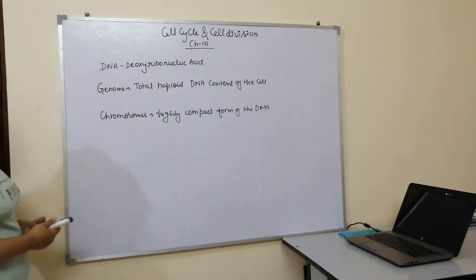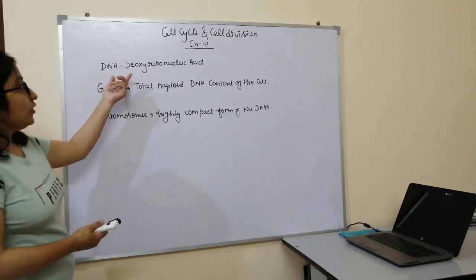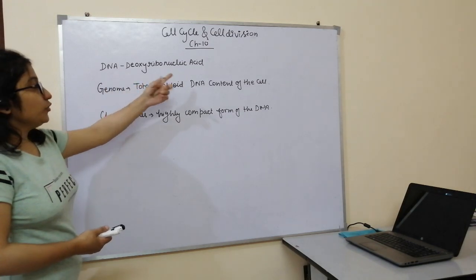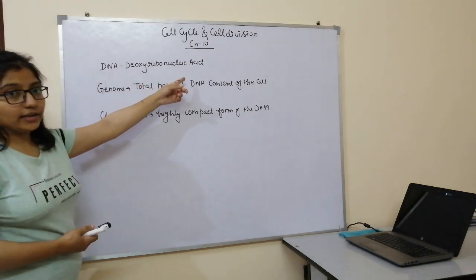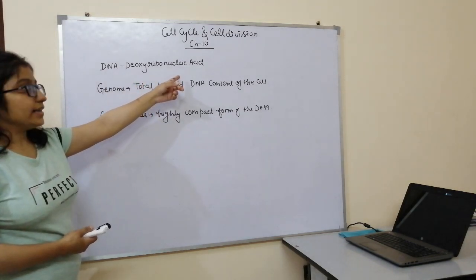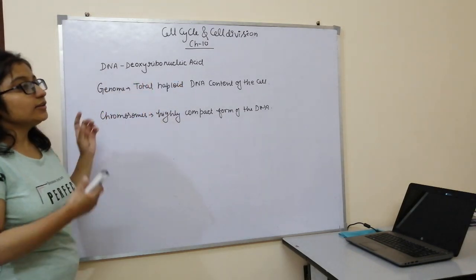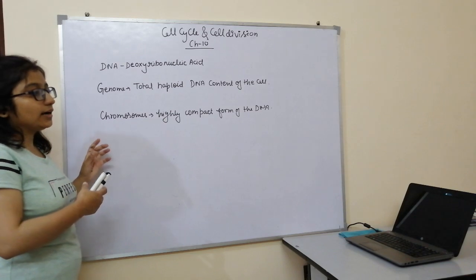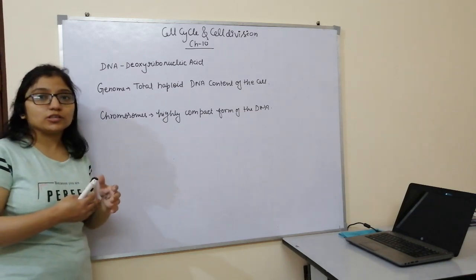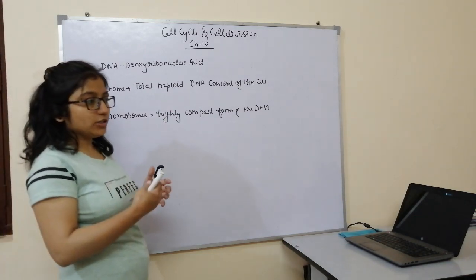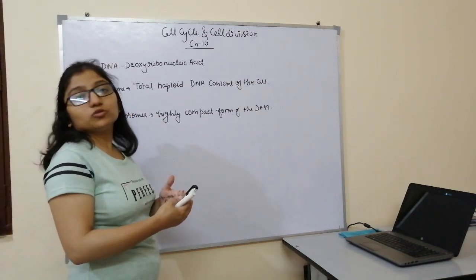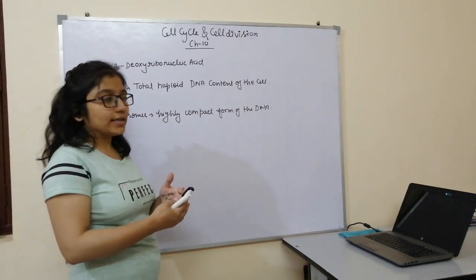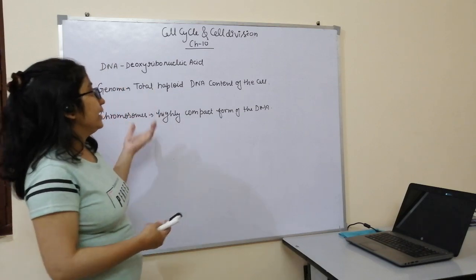DNA is a deoxyribonucleic acid and is the genetic material of the cell. All the information is passed on to the daughter cell by DNA.